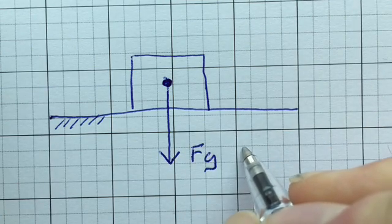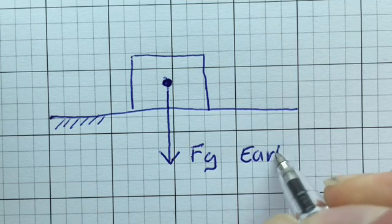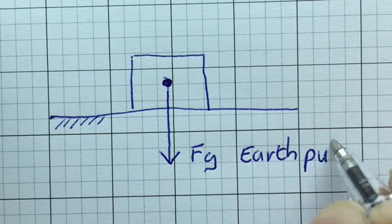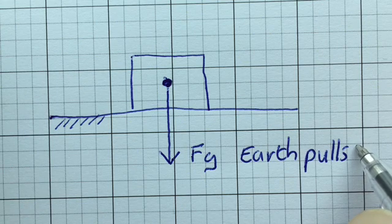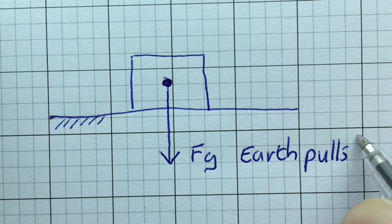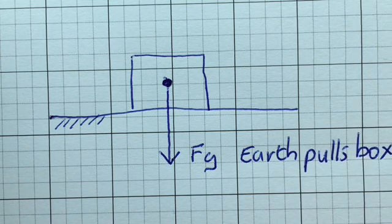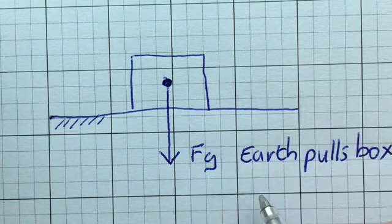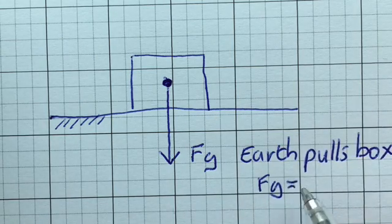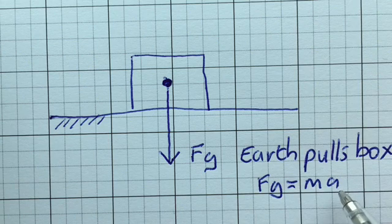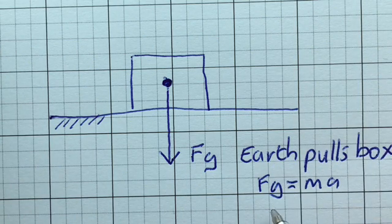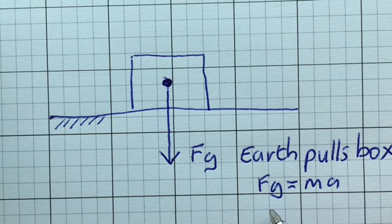That's the force where Earth pulls the box - in this case, the carriage. We know that Fg equals mass times acceleration from Newton's second law, and g due to gravity equals 9.8 meters per second per second.